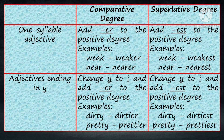For example, weak becomes weaker and weakest. Near becomes nearer and nearest. For adjectives ending in -y, we change y to i and add -er to form the comparative degree, and change y to i and add -est to form the superlative degree.